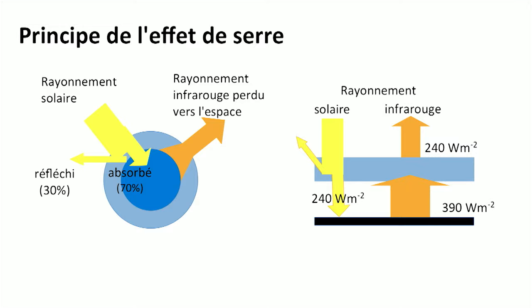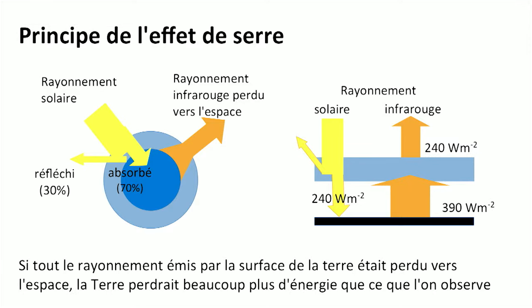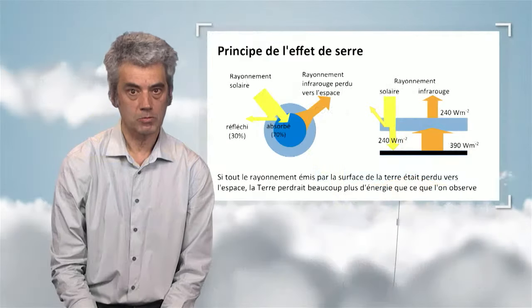If one were to look at the earth from a satellite, one would see that the earth receives 240 watts per square meter of solar energy and loses the same quantity in the form of infrared rays. But if we look at the infrared energy released by the earth's surface, we observe that it is approximately 390 watts per square meter. Therefore, the energy released by the earth's surface is much greater than the energy lost at the top of the atmosphere — meaning infrared rays are trapped by the atmosphere.